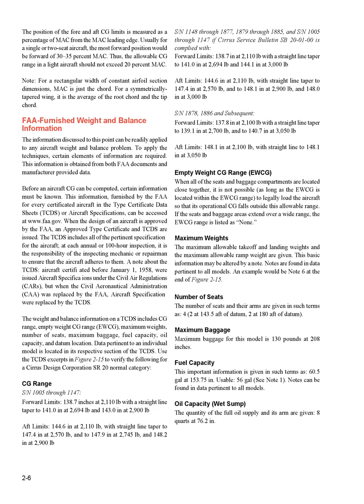FAA Furnished Weight and Balance Information: the techniques discussed can be applied to any aircraft weight and balance problem, but certain information is required. This information is obtained from FAA documents and manufacturer-provided data. Before an aircraft CG can be computed, certain information must be known — furnished by the FAA for every certificated aircraft in the Type Certificate Data Sheets, TCDS, or aircraft specifications, accessible at www.faa.gov. When an aircraft design is approved, an approved type certificate and TCDS are issued; the TCDS includes all pertinent specifications for the aircraft.